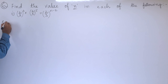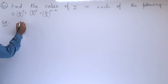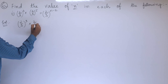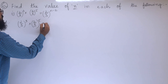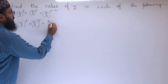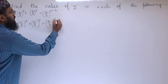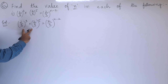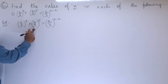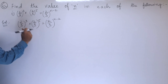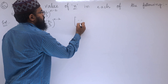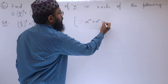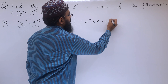Let us start the solution. In the solution, we are given (2/3)³ × (2/3)⁵ = (2/3)^(n-2). When the bases are same, the powers should be added. So we can write the formula: a^m × a^n = a^(m+n).